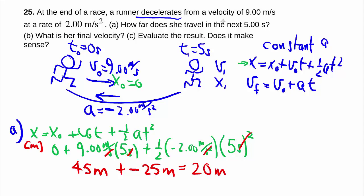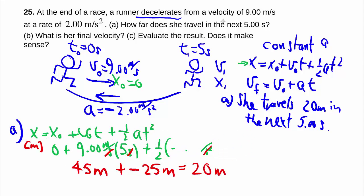And you know that the unit works out, which is assuring that at least you didn't put in things in the wrong spot. Since this is a little lengthier, it's a good idea to answer the question fully in a separate sentence. Just to show that you have found an answer, the exact answer they're asking for. So she travels 20 meters in the next 5.00 seconds. Cleaning all the stuff up. Start fresh.